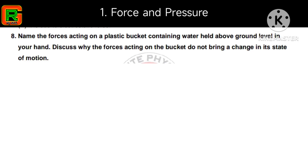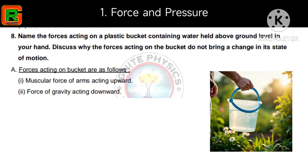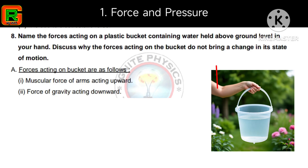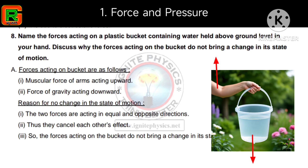Eighth question: name the forces acting on a plastic bucket containing water held above ground level in your hand, and discuss why these forces do not bring a change in its state of motion. The forces are: muscular force of the arms acting upward, and force of gravity acting downward. The two forces are equal and act in opposite directions, so they cancel each other's effect, resulting in no change in the state of motion.